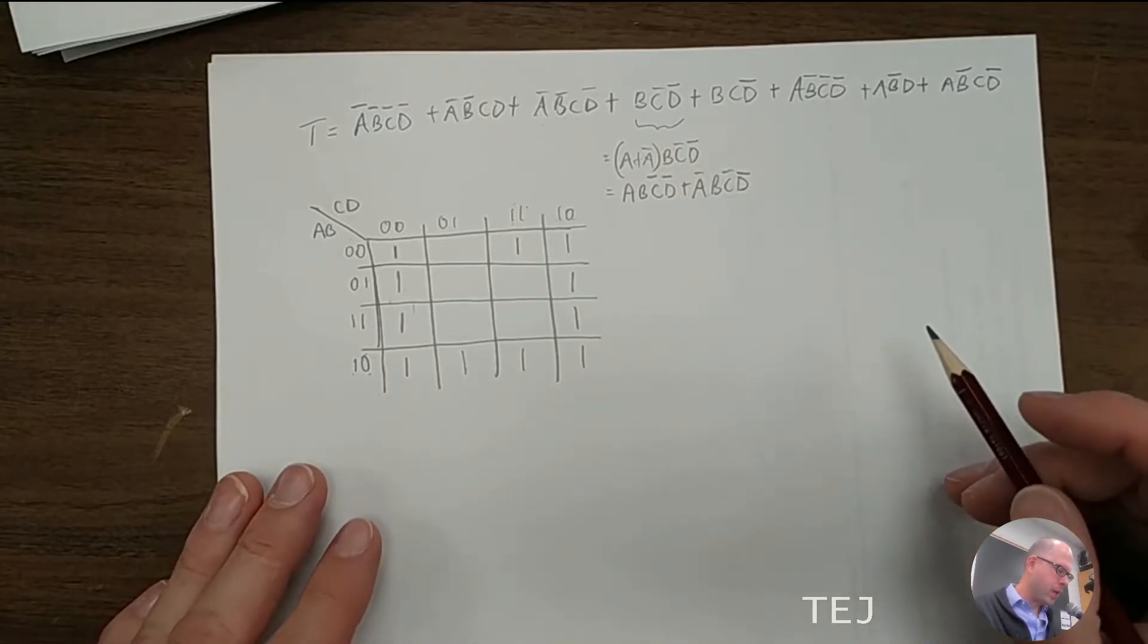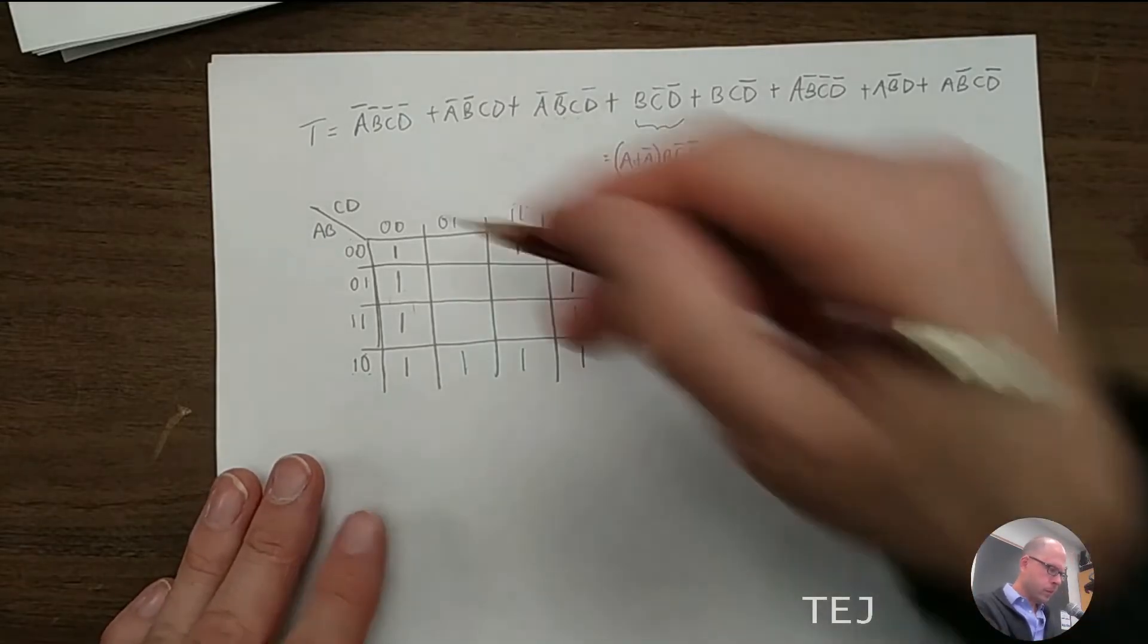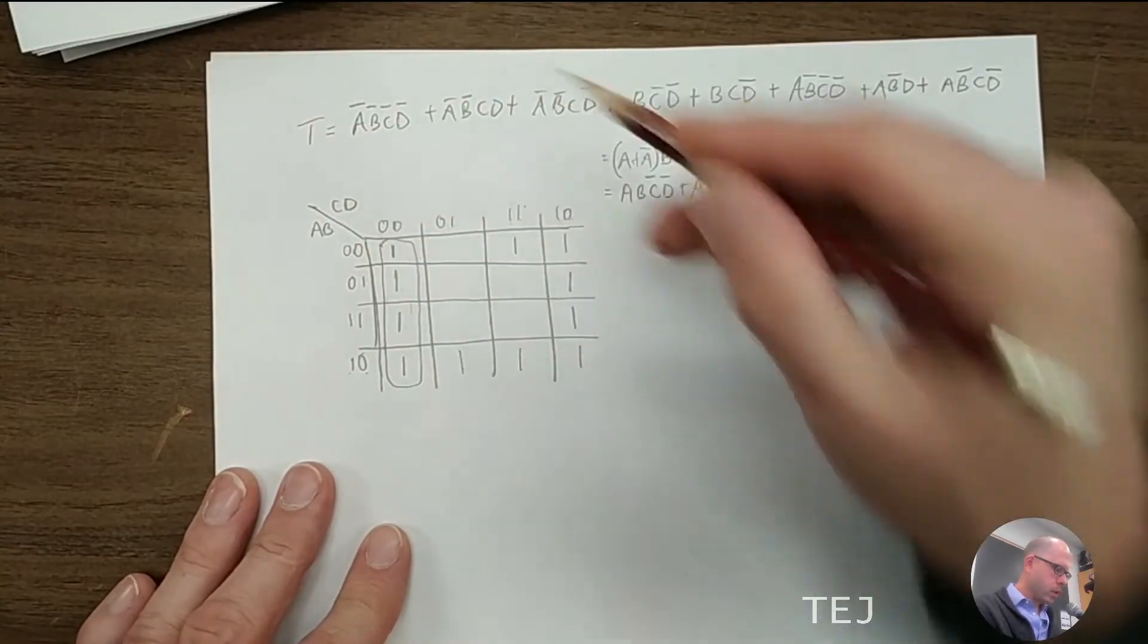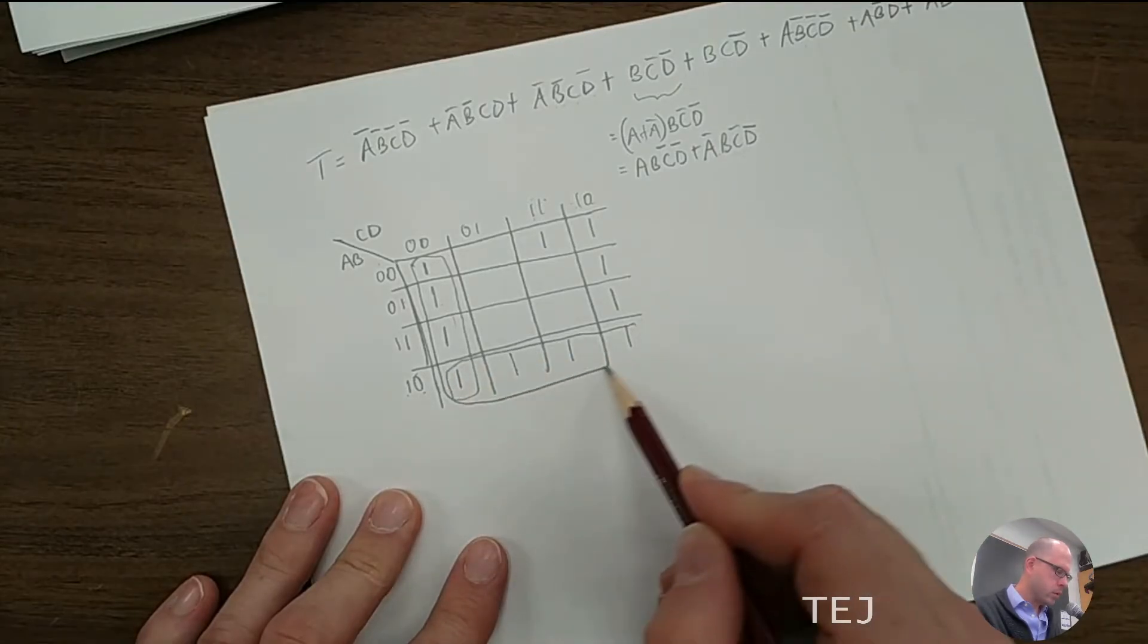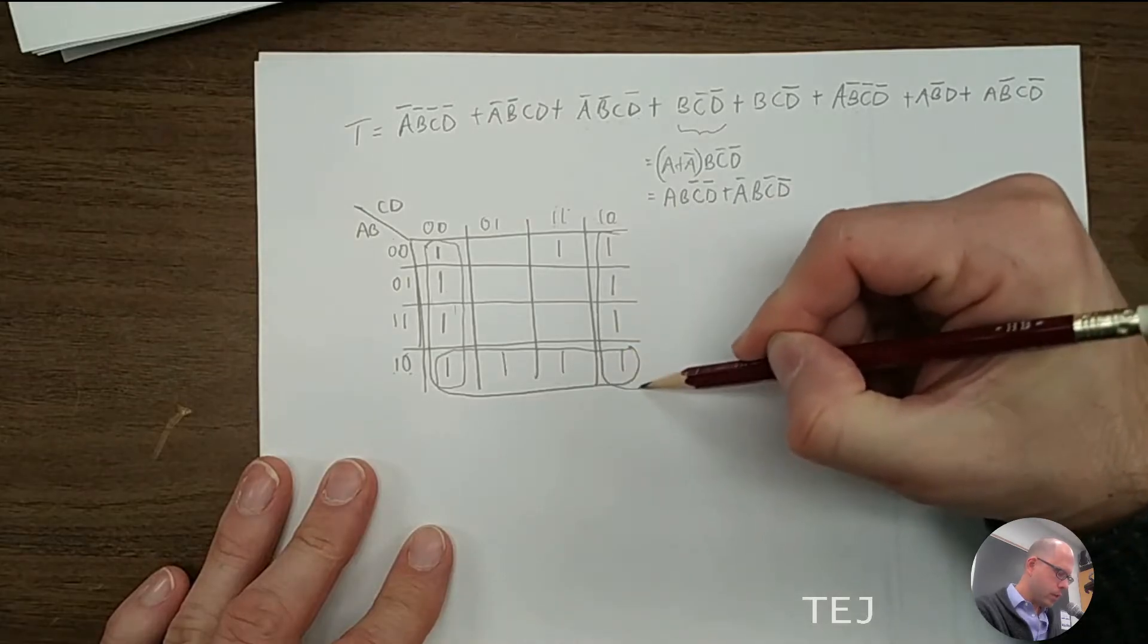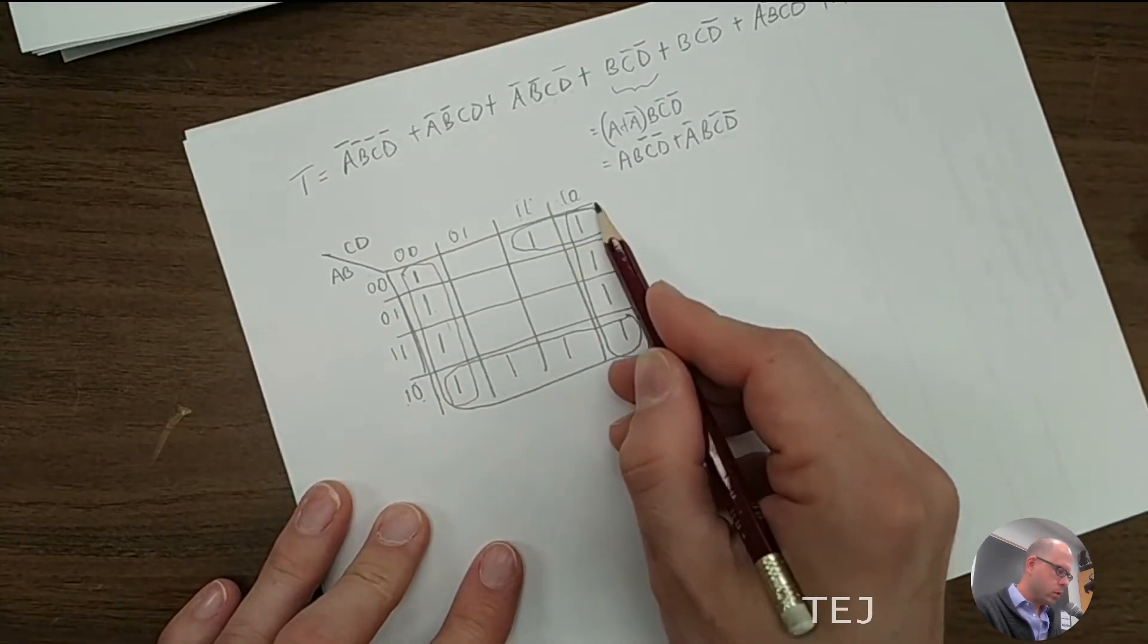So let's try to do the least number of circles or groups. So here's one. This is pretty non-negotiable, just the four there. And then we have another four here. These are pretty obvious. And then we have another four there. And then finally, a group of two. So we have four groups.